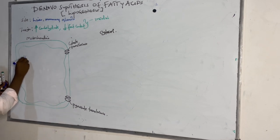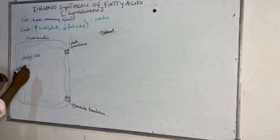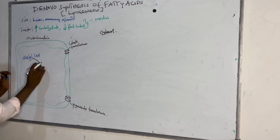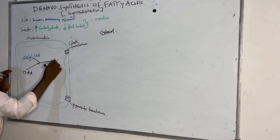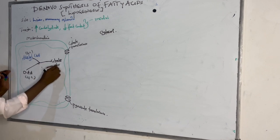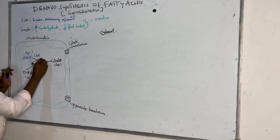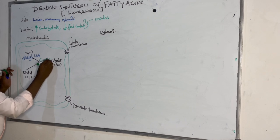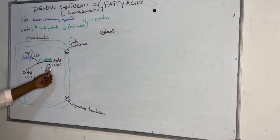When we have acetyl-CoA (coenzyme A) in the mitochondria, this acetyl-CoA is going to join with oxaloacetate in the mitochondria to form citrate. Oxaloacetate is a 4-carbon compound and acetyl-CoA is a 2-carbon compound; they combine to form a 6-carbon citrate in the presence of the enzyme citrate synthase.